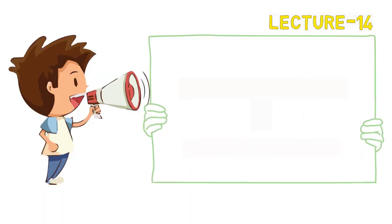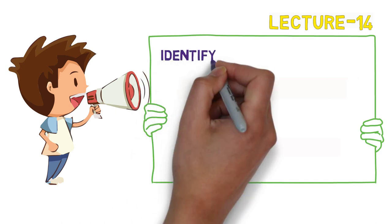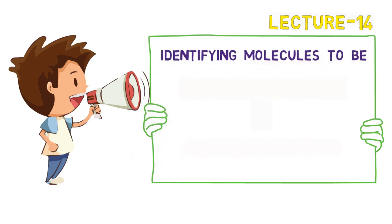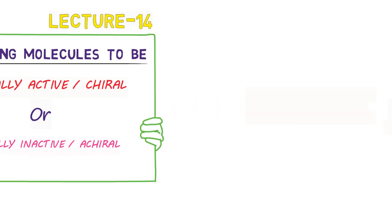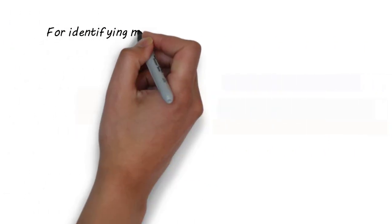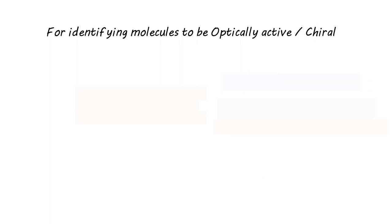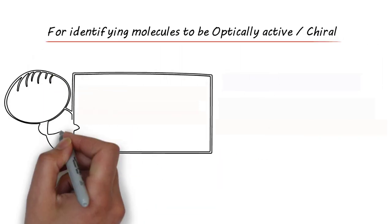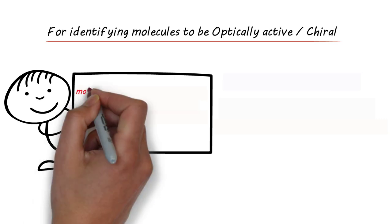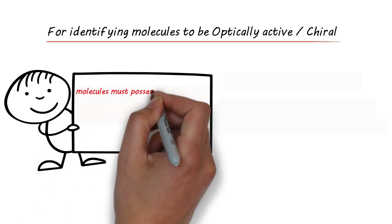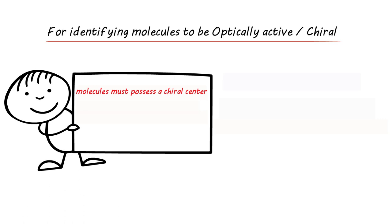In this lecture we will try to understand how we can identify molecules to be optically active, that is chiral, or optically inactive, that is achiral. In the previous video we discussed conditions under which molecules are optically active.